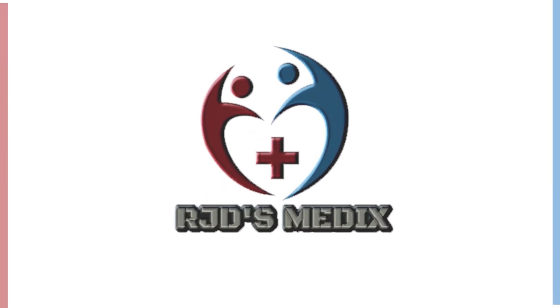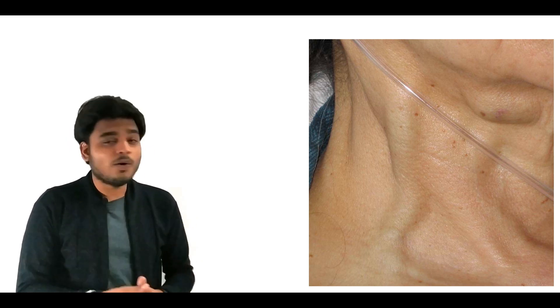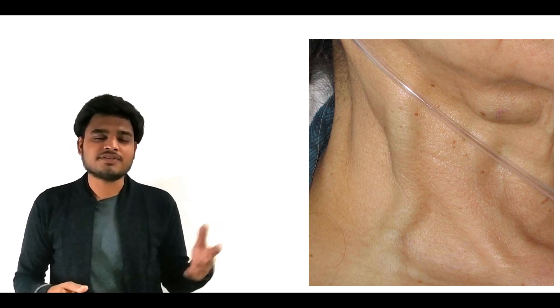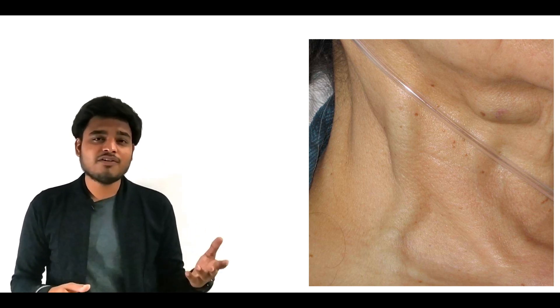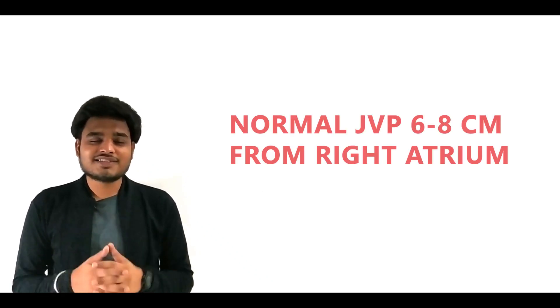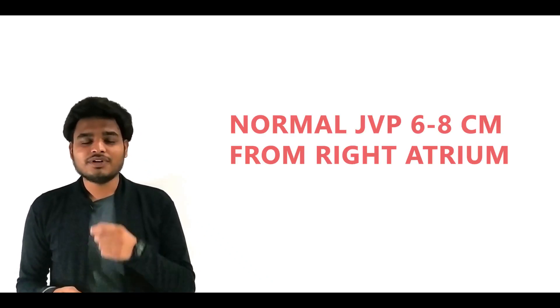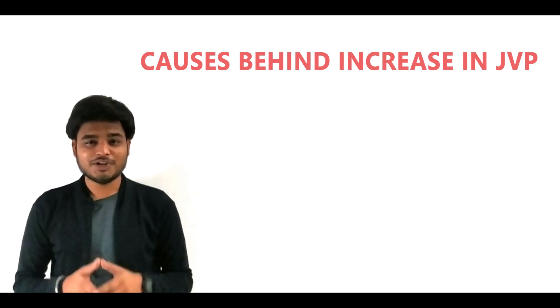This is the enlarged neck vein, or we can say distension of neck veins. Normally it is not visible, but whenever the jugular venous pressure inside this vein is increased, it becomes visible and distended. Normally, the jugular venous pressure is 6 to 8 centimeters above the right atrium of the heart. Now, the causes behind increasing the jugular venous pressure are...